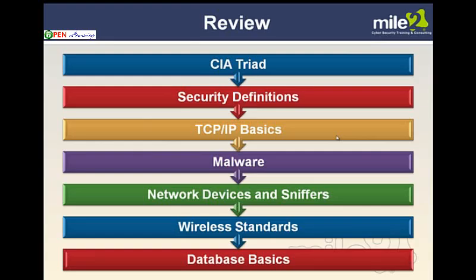So in this very long chapter, we have looked at the CIA triad — confidentiality, integrity, availability. Security definitions. A little bit of TCP/IP basics. Malware: viruses, worms, Trojan horse programs, and so on. Network devices and sniffers — hubs and switches. Wireless standards — 802.11 b, g, n, and others. And database basics.